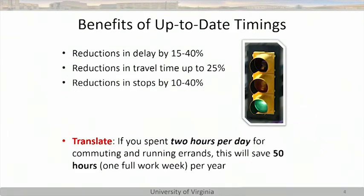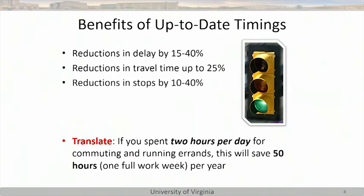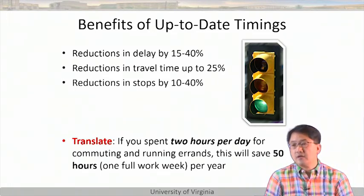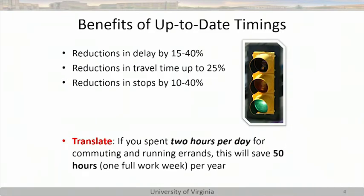There's a report on the benefits of keeping timing up to date. If you keep a good timing plan, you can actually reduce delay up to 40%, travel time up to 25%, and stops are reduced up to 40%. Someone converted this into driver benefit: assuming each person spends about two hours per day commuting and doing activities, these percentages add up to about 50 hours per year — essentially an extra week of vacation. It's a sales pitch to make sure timing gets updated.